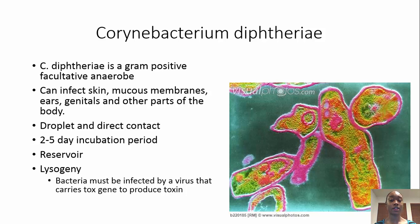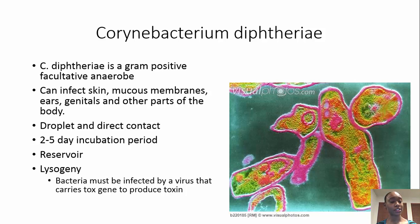The bacteria is actually lysogenic — it only produces a toxin if it has been infected by a virus that carries a tox gene. So this particular bacteria will not produce toxins in the body unless it is infected by the particular virus that carries the tox gene.